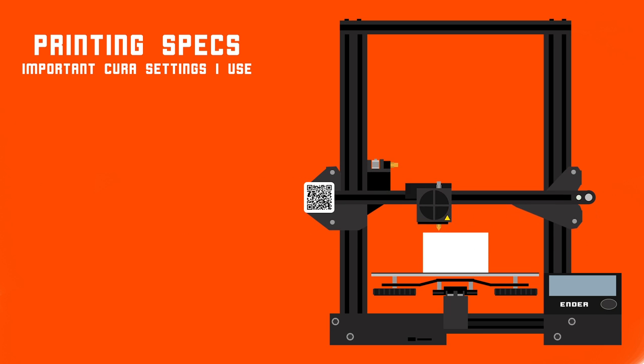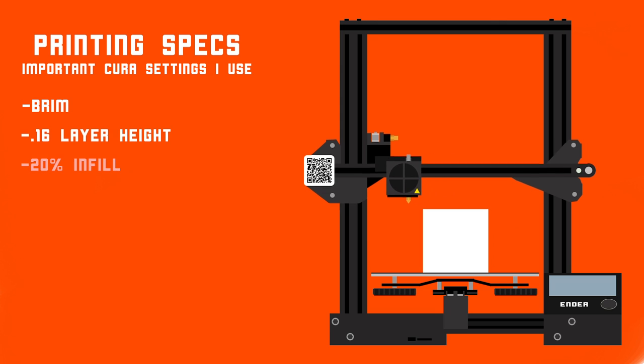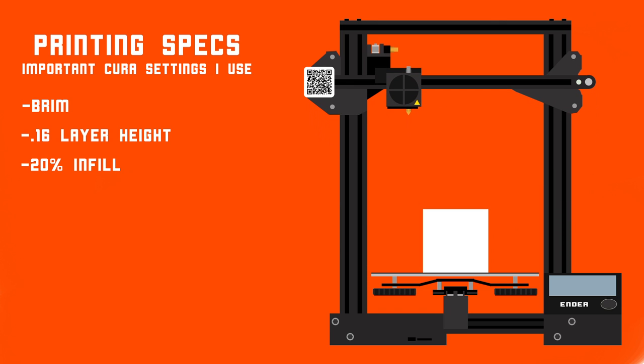Now onto printing it. On screen now are the basic print settings for all the pieces. I use Cura Slicer and an Ender 3. I print with a brim instead of a raft, 0.16mm layer height and 20% cubic infill.